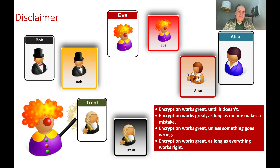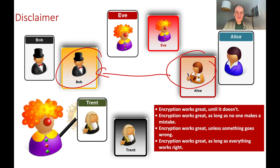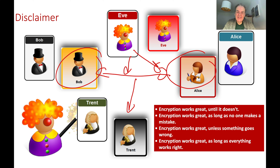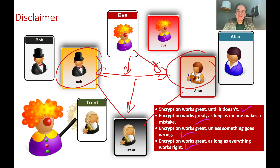Along the way we'll tell stories about Bob and Alice. Our goal is to make sure that Bob and Alice can communicate securely, and that Eve doesn't eavesdrop on their conversations, modify their communications, or try to pretend to be the other person. For this we'll probably need Trent — the trusted entity that both Bob and Alice trust. A famous saying goes: encryption works great until it doesn't, as long as no one makes a mistake, unless something goes wrong, and as long as everything works right.